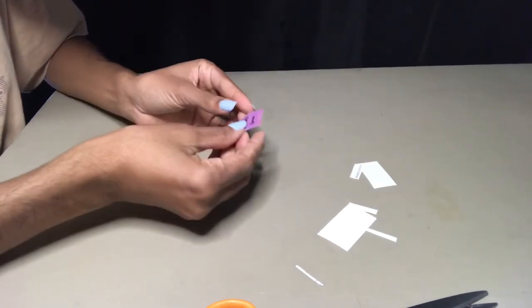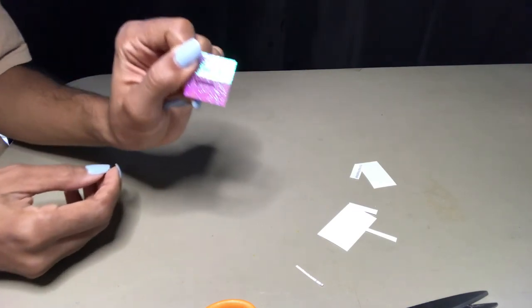Turn your label the opposite direction and stick the other label on. And this is what it looks like.